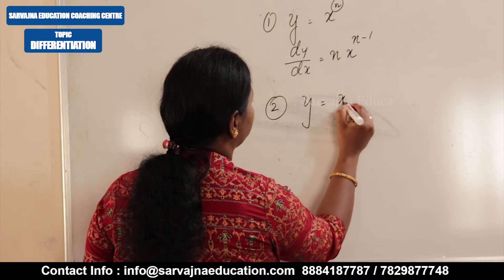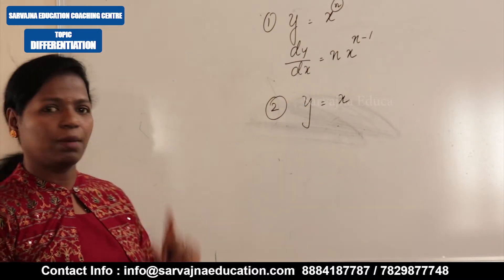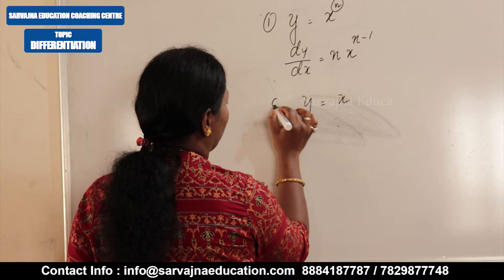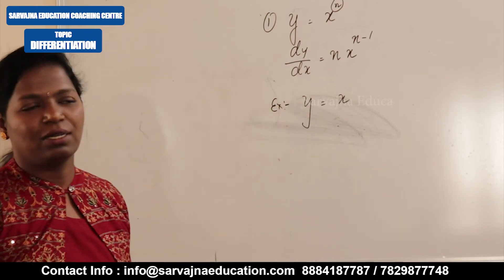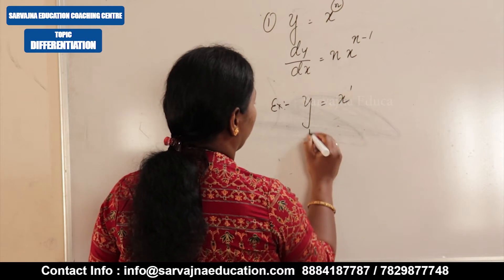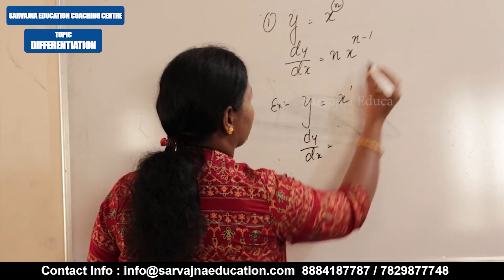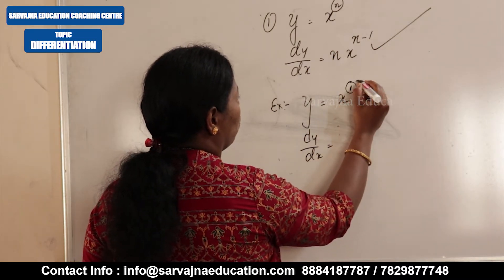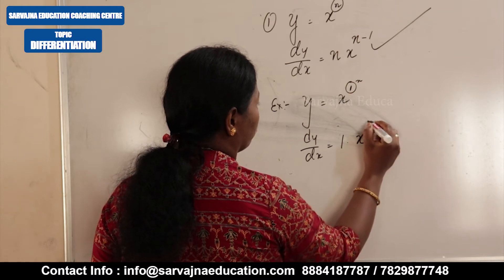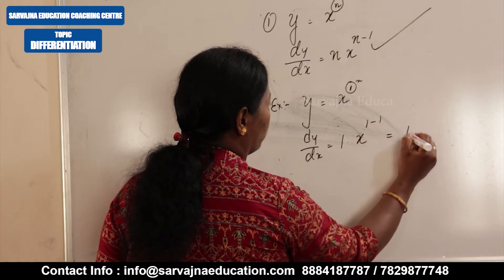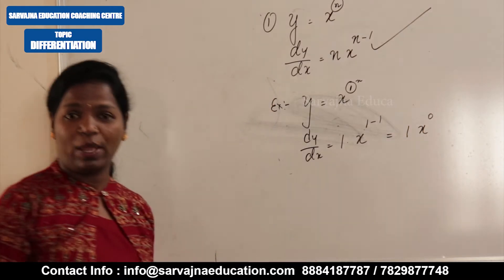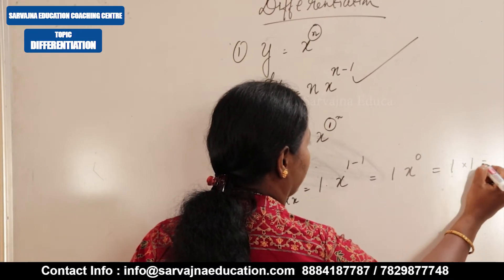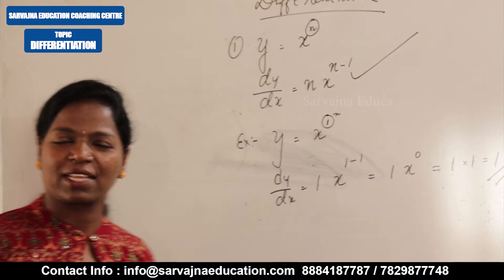The second one: y is equal to x. Let's consider y = x as an example. When there is no visible power, the default power is 1. So dy/dx — applying the formula x to the power of n gives n x to the power of n minus 1. Here n is 1, so it's 1 times x to the power of 1 minus 1, which is 1 times x to the power of 0. Any variable to the power of 0 is always 1, so 1 times 1 equals 1. The differentiation of x is 1.